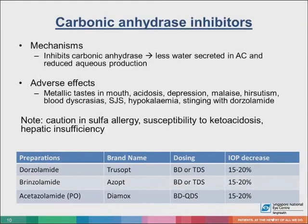Carbonic anhydrase inhibitors reduce aqueous production and allow a 15% to 20% drop in IOP. This class was initially available as an oral preparation and was known to induce systemic side effects, commonly a metallic taste in the mouth, depression, and importantly, kidney stones and aplastic anemia. Topical preparations dramatically reduce systemic side effects, though local irritation is common and especially pronounced with dorzolamide. These drugs are from the sulfonamide family and are therefore contraindicated in patients with sulfa allergies.